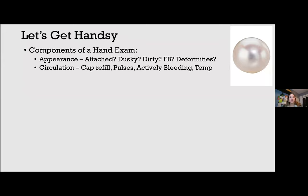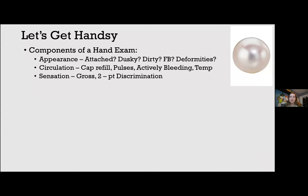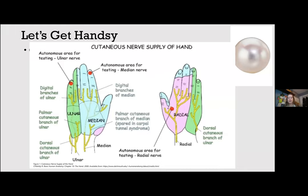For circulation, the radial, ulnar, and digital pulses should be examined. A finger is usually adequately perfused if one digital artery is patent. There is significant overlap in the hand — the ulnar artery provides most blood flow to the fingers via the superficial palmar branch forming a connection with the superficial branch of the radial artery. For sensation, both two-point and gross sensation should be evaluated. Proximal de-innervation may be assessed by knowing the autonomous sensory zones.